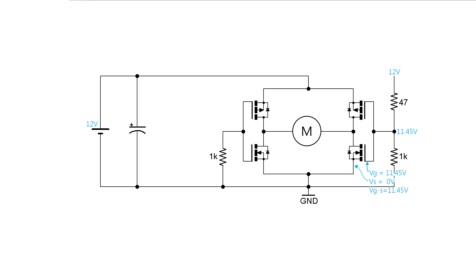The voltage between gate and source on the N-channel MOSFET will be 11.45 volts, so the transistor turns on. On the top half of the bridge, the voltage between gate and source of the P-channel MOSFET will be minus 0.55 volts, so the PFET will turn off.